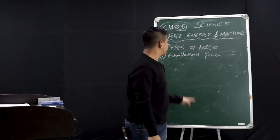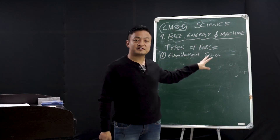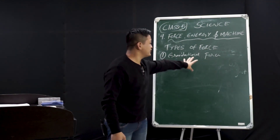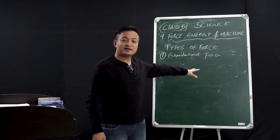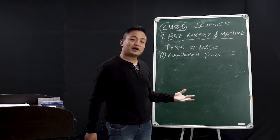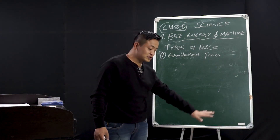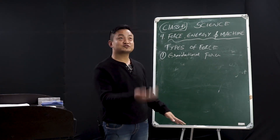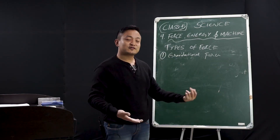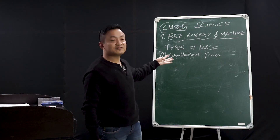The first type of force is gravitational force — force of gravity. This force is very practical. You have mass, you have weight. If you jump, you'll be attracted towards gravity. If I throw this chalk, it will be attracted towards gravity down. This is a simple example of gravitational force.